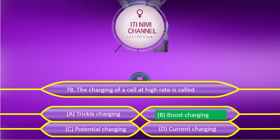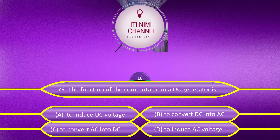The function of the commutator in a DC generator is: Option A, to induce DC voltage; Option B, to convert DC into AC; Option C, to convert AC into DC; Option D, to induce AC voltage. The answer is Option C, to convert AC into DC.